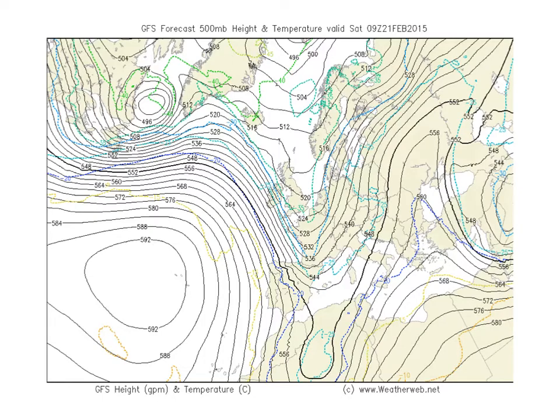This is the 500 millibar chart. So this is up at about 18,000 feet in the atmosphere and we've got solid lines on here. These solid lines join areas of equal geopotential height. They're like isobars at the surface, so the closer together the geopotential height lines are, the stronger the winds at that level.